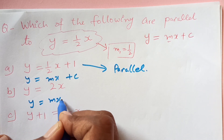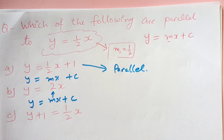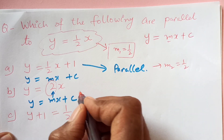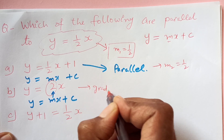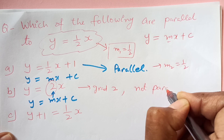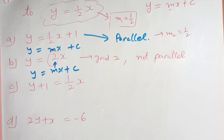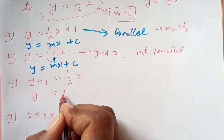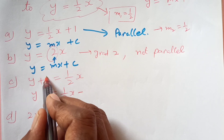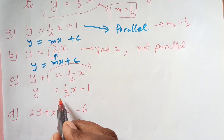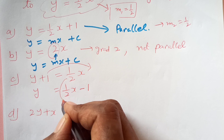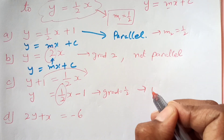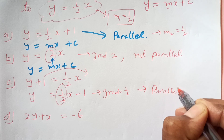Again we will compare with y equals Mx plus C. This line is not in standard form, but we can convert it. Y equals half x, shifting one to the other side gives minus 1. Now you can see this is y equals Mx plus C, so the gradient M here is half, which is equal to the given line's gradient. So this line is parallel to the given line.